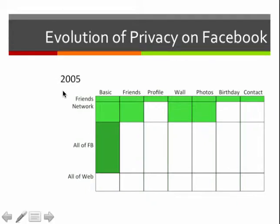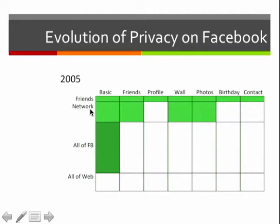On the y-axis here are different levels of accessibility for the information. We have friends, your network, all of Facebook, and all of the web. This will shift a little bit in the middle. Networks used to be the main way of identifying yourself, and that switched. But in 2005, networks were there, and so you'll eventually see this row change to friends of friends.